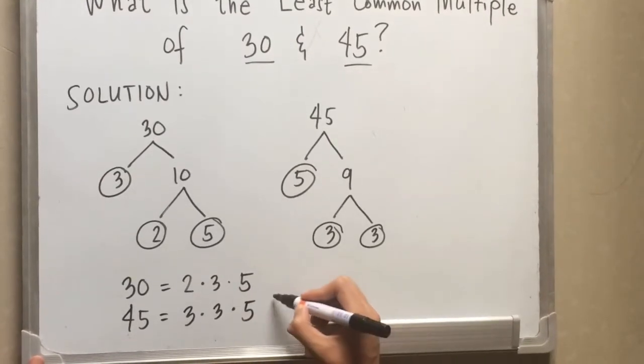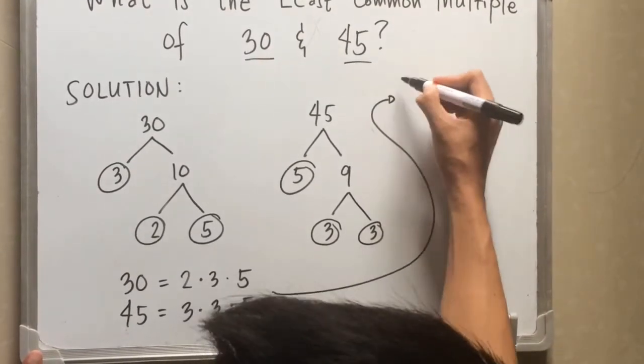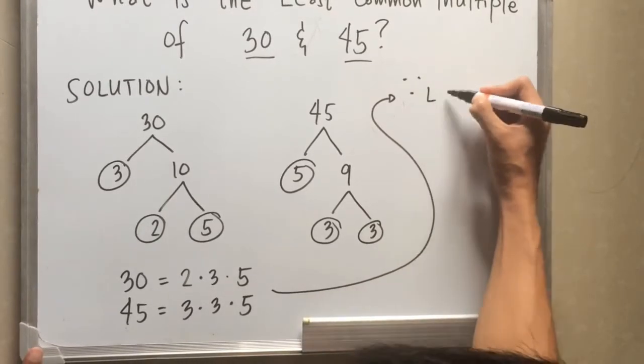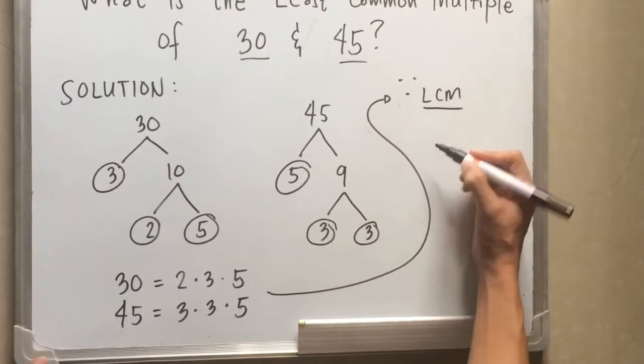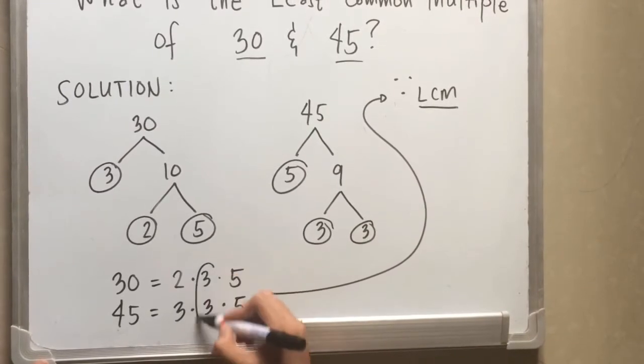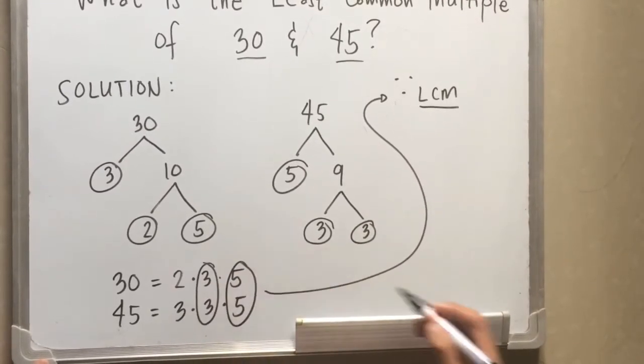And to be able to get the least common multiple for 30 and 45 we can see that 3 and 5 are common factors for 30 and 45. So we can count it as 1.